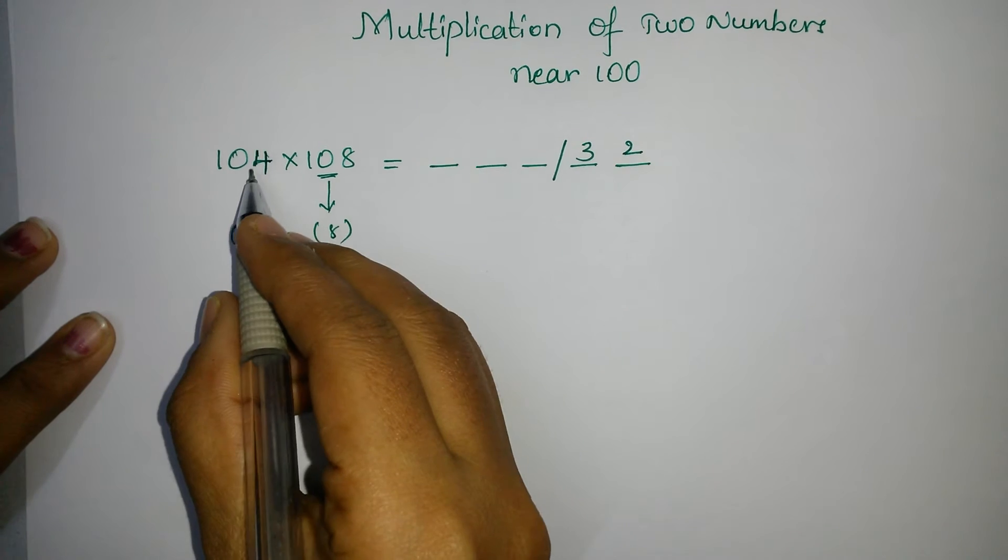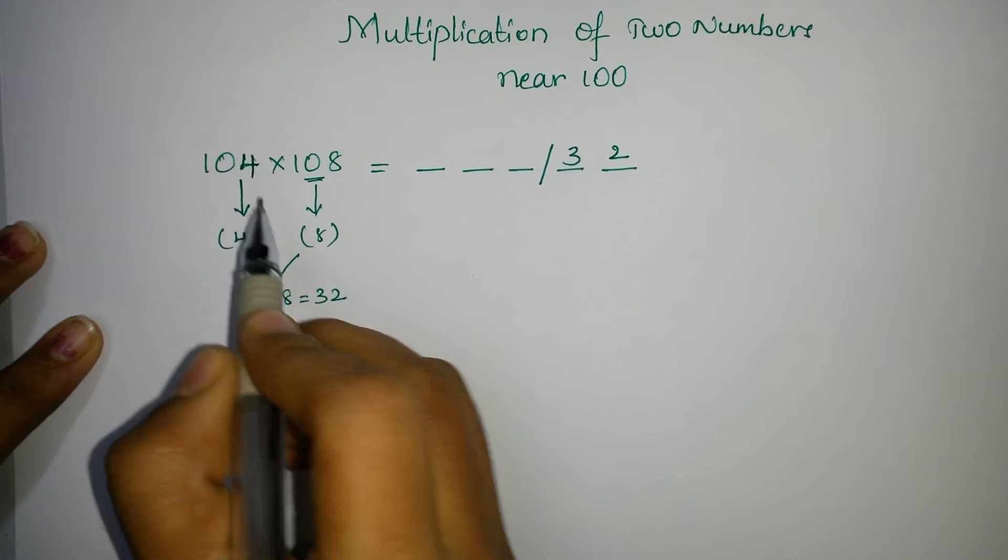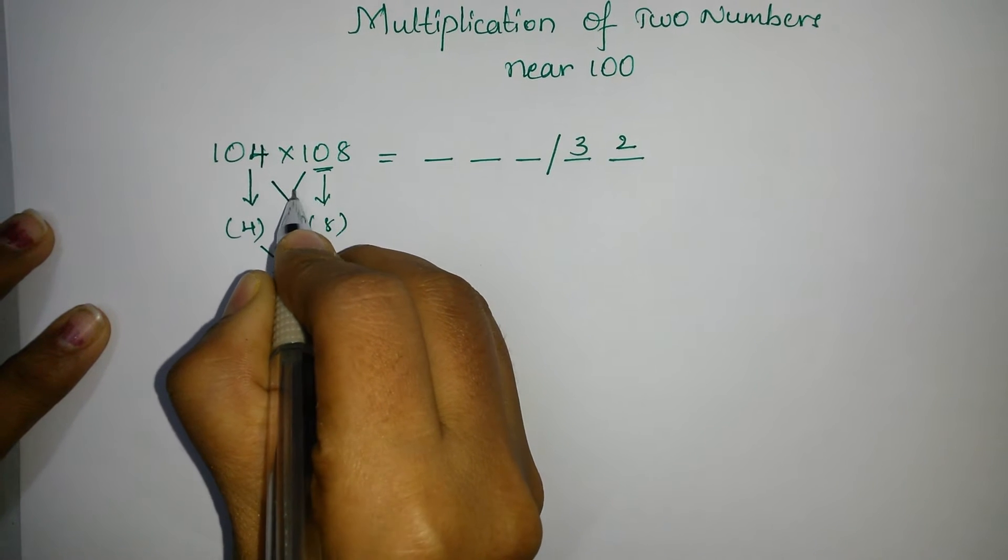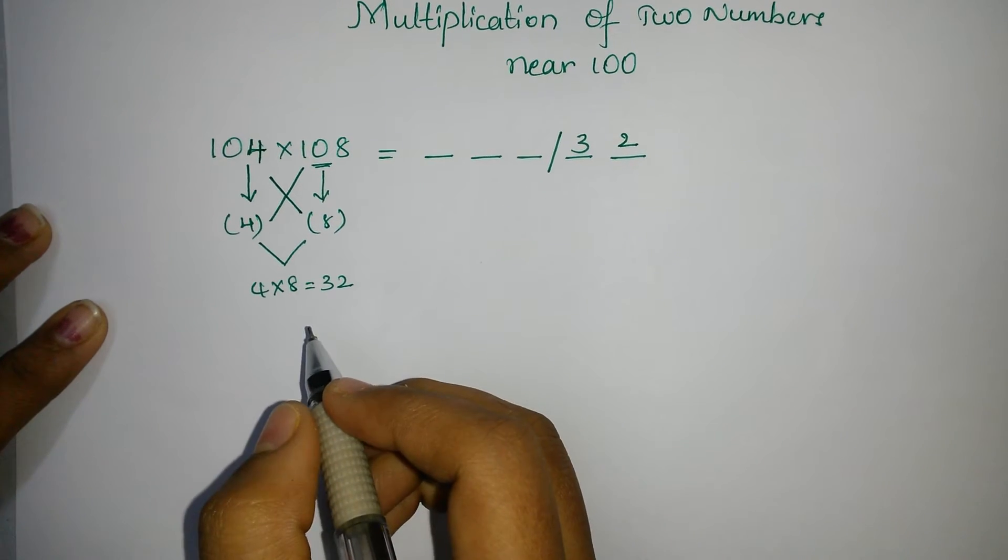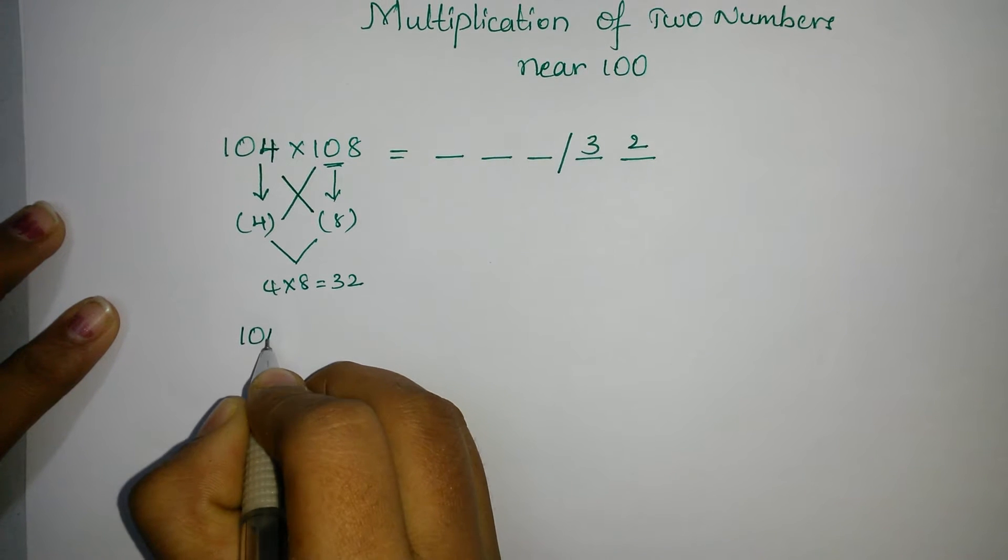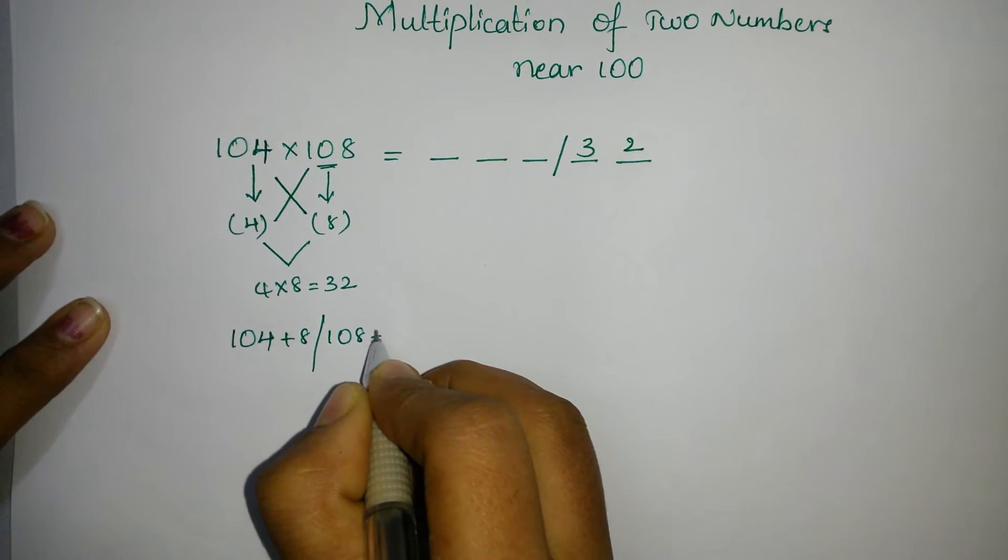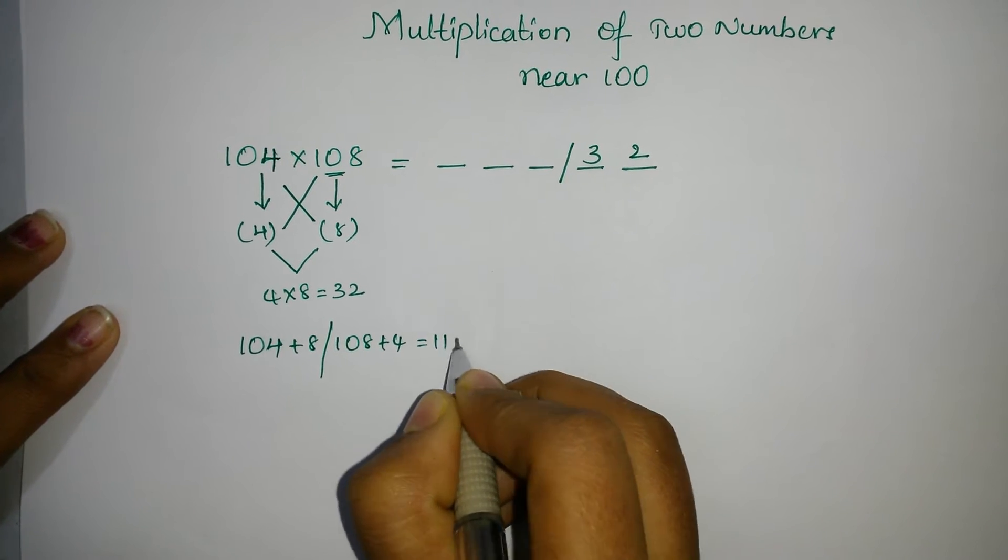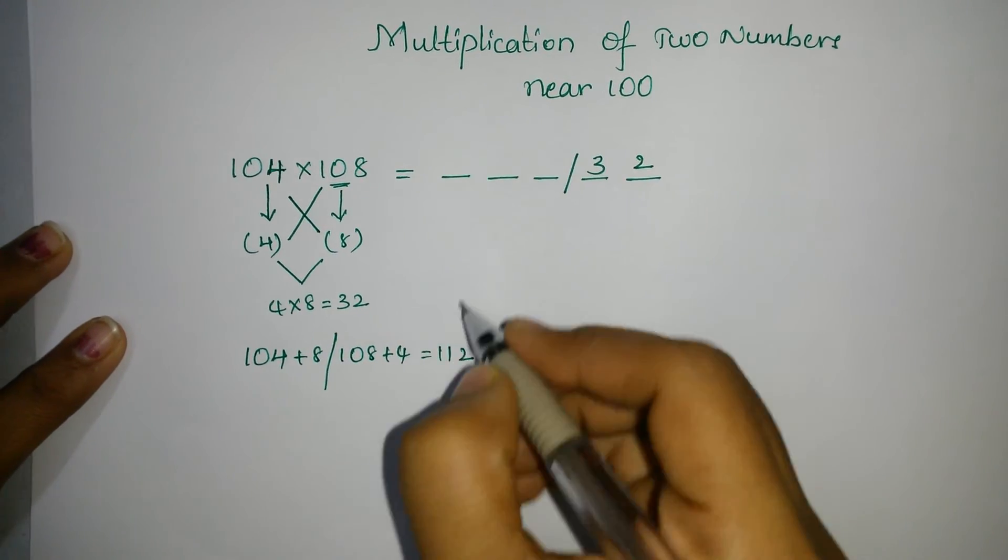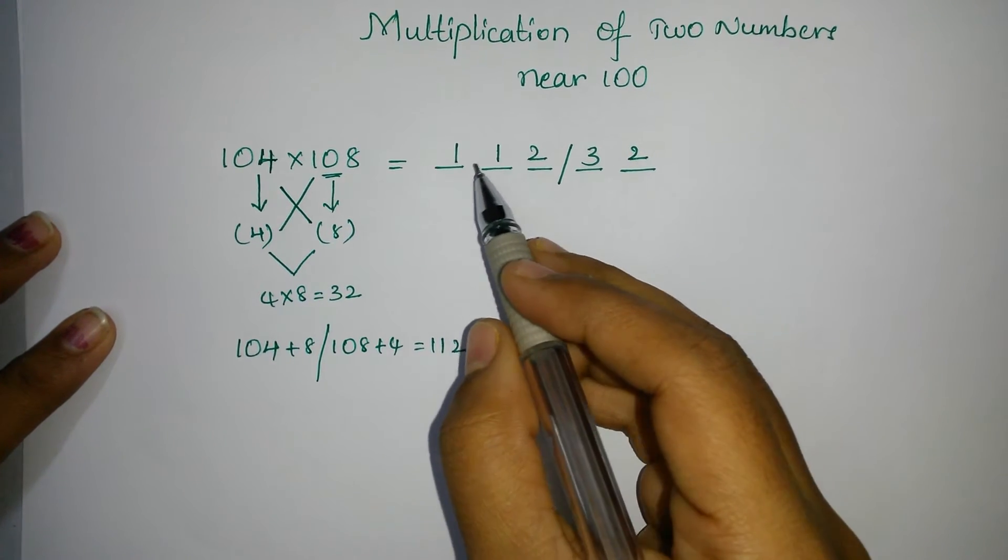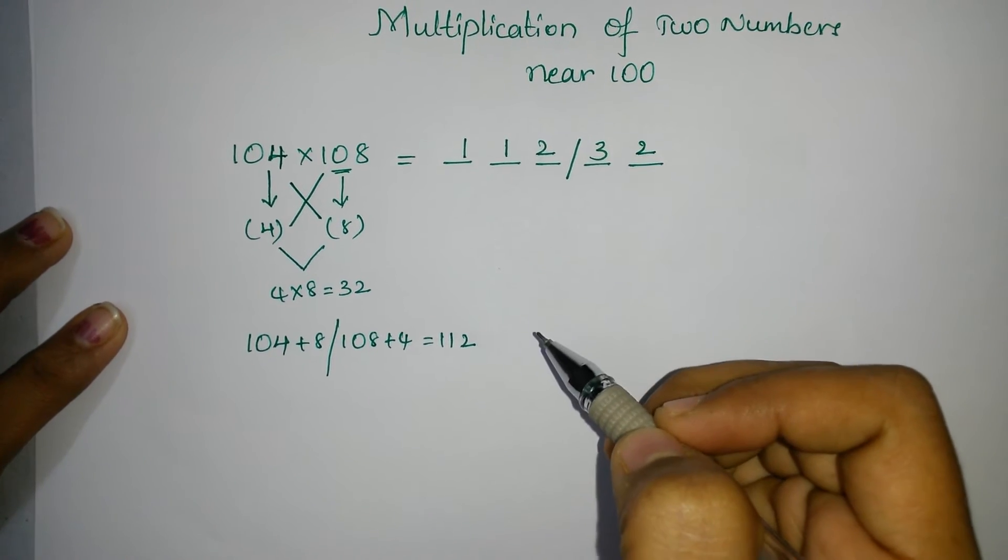Now, see what you have to do. This 104 plus 8 and this 108 plus 4. When you add these two, you will get answer as 112. 104 plus 8 or 108 plus 4. That is equals to 112. Now write this 112 here. So the answer will be 11232 is the answer.